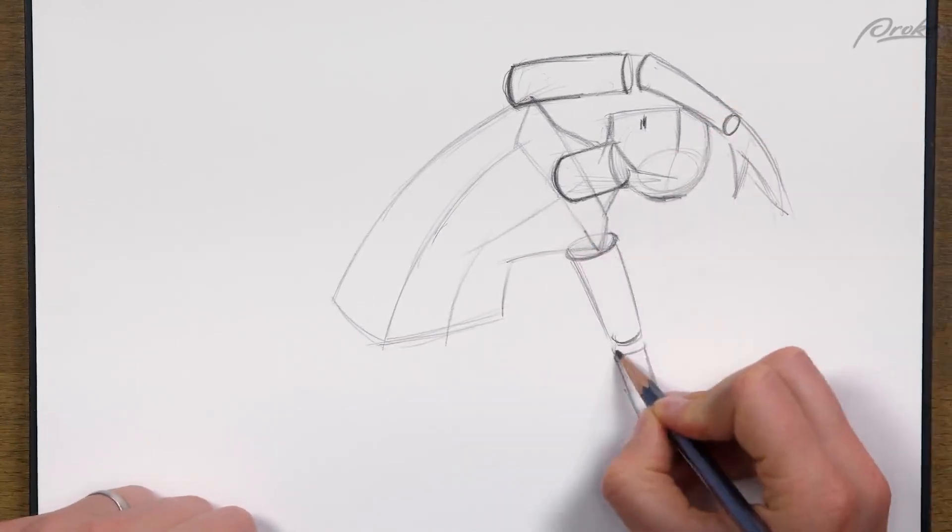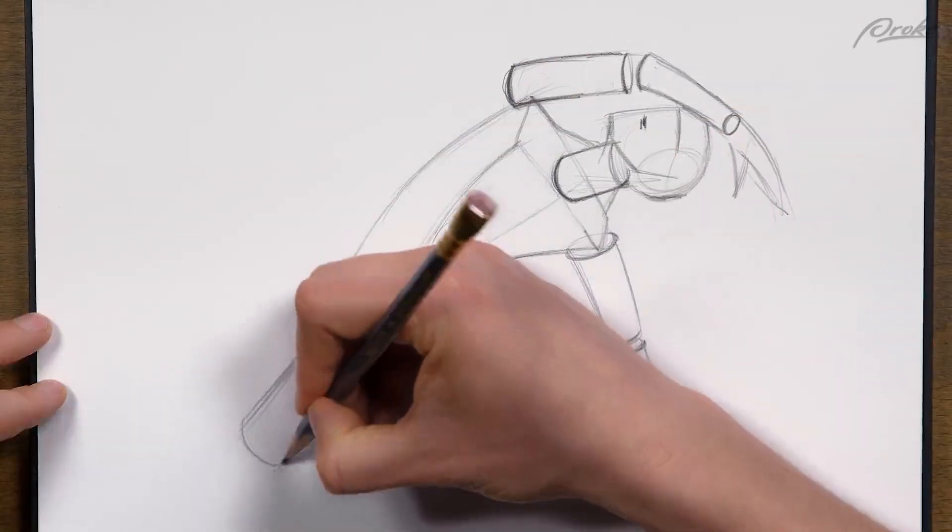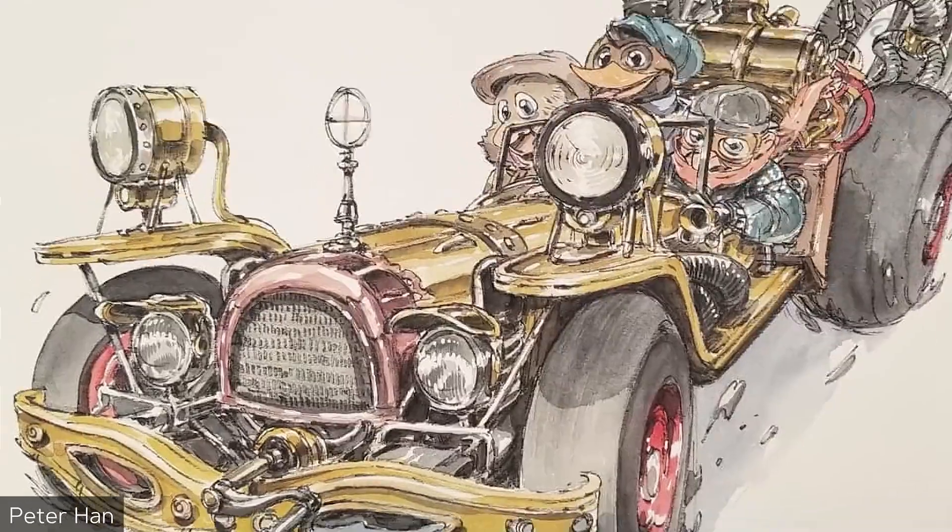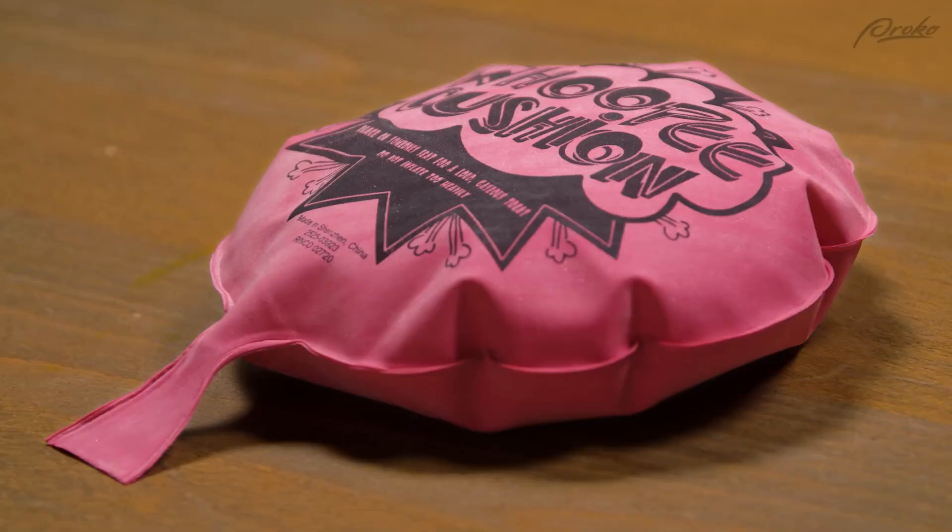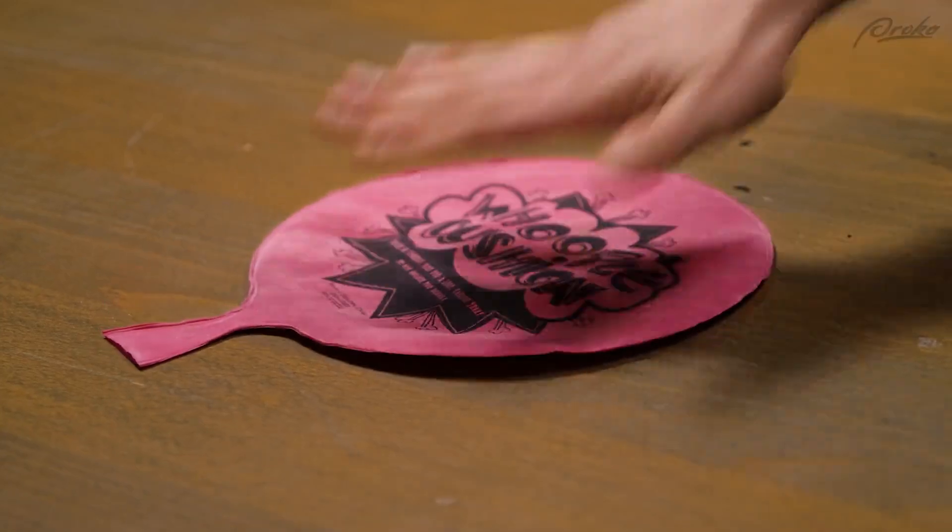Cylinders are really important to learn because a lot of things are cylindrical. Arms, legs, car tires, whoopee cushions. Kind of. When it's flattened, it's basically an oval.